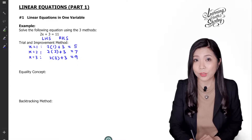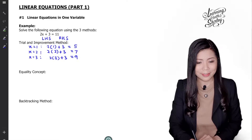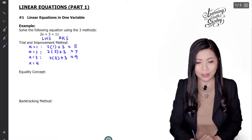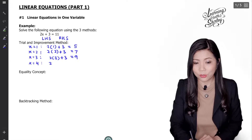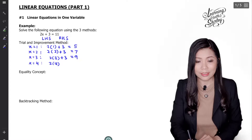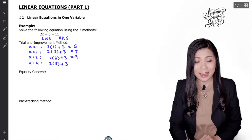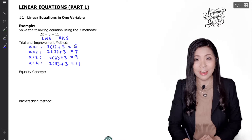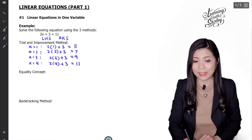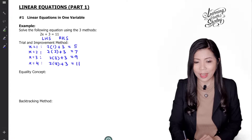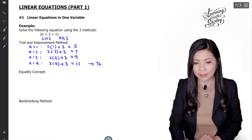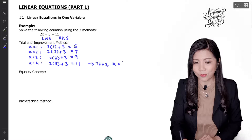Let's try x equals to 4. So 2 times 4 is 8, plus 3 is 11. We got the answer already. Therefore x equals to 4, and that's the answer.